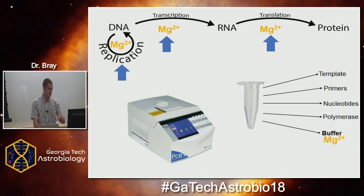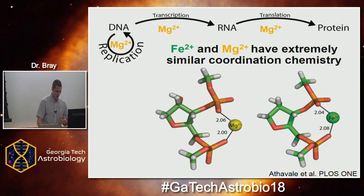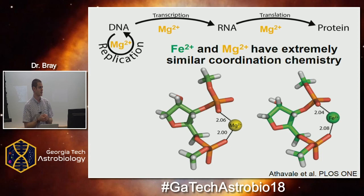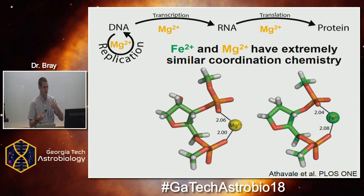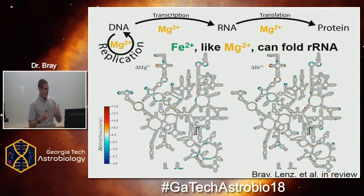Going back to why iron would be important — we've done a lot of work in the Williams lab to build the case that iron is possibly interchangeable with magnesium in these systems. Here we have an in silico modeled interaction with either magnesium or iron in an RNA molecule at the phosphate backbone, and you can see how incredibly conserved the geometry and bond lengths are when you swap magnesium out and put iron in.